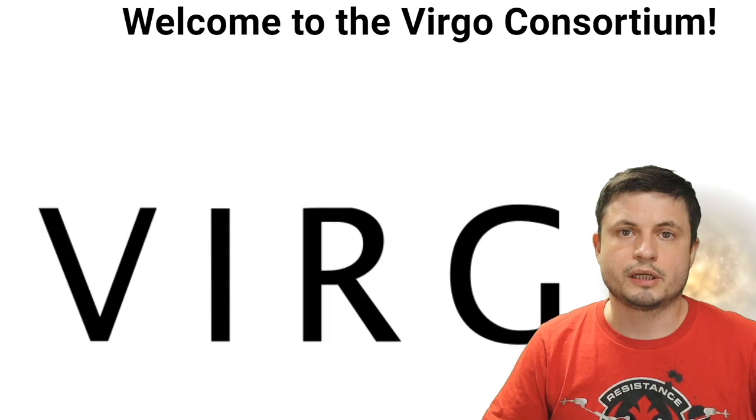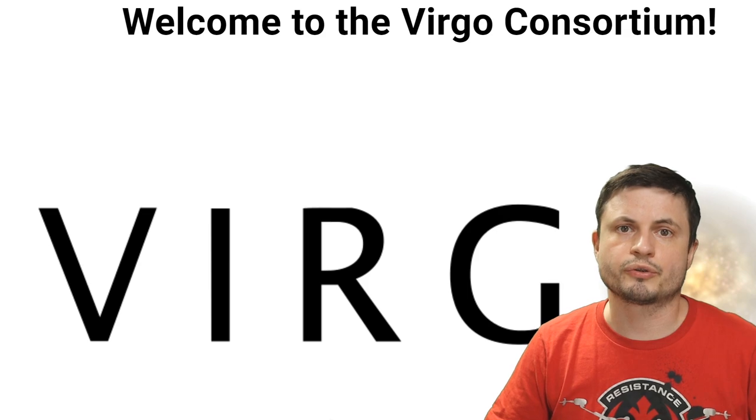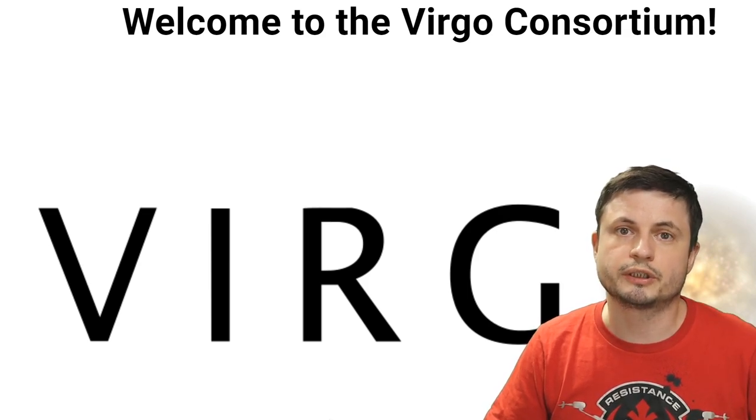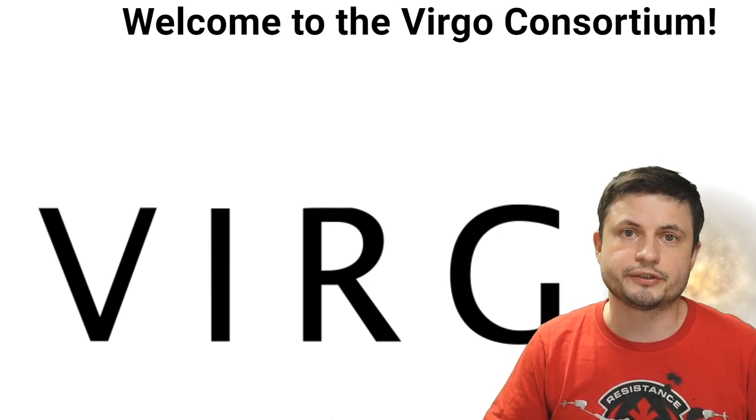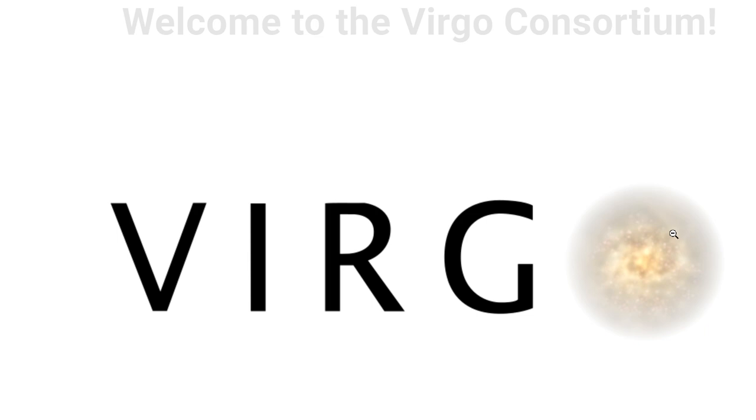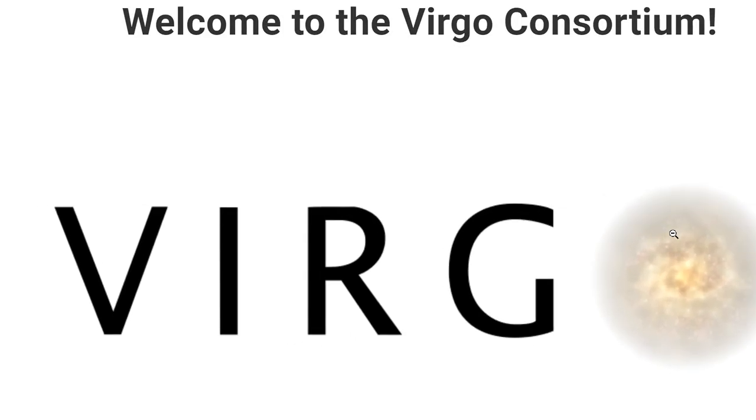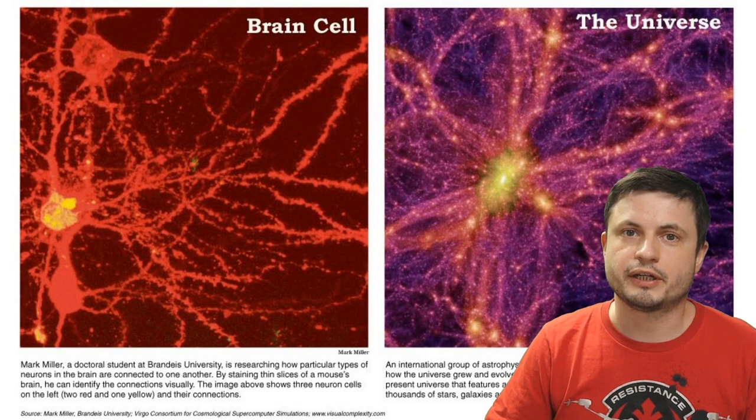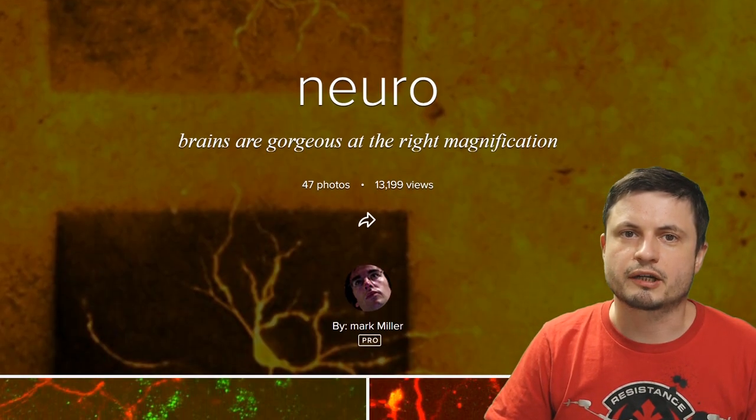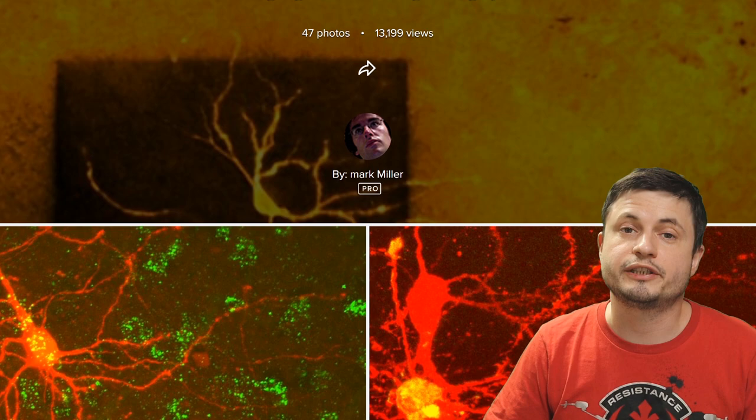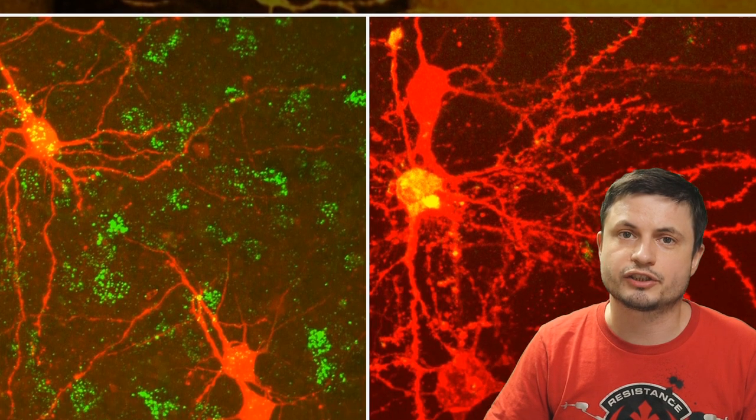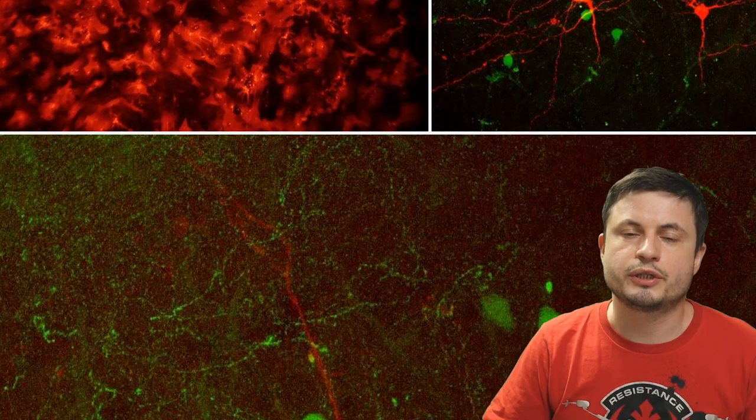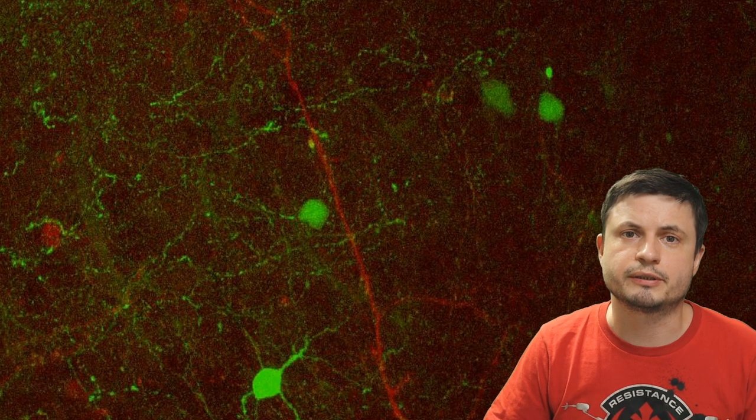With the picture on the right originally being created by this Virgo consortium that usually produces a lot of supercomputer simulations, with a website that for some reason also does this. And the picture on the left, the cross section of our brain, is something that this wonderful person Mark Miller created long time ago for his PhD thesis. And he actually has quite a lot of these pictures, more of which you can discover on his account in the description below.